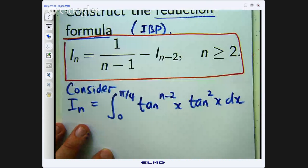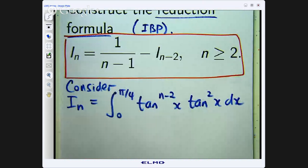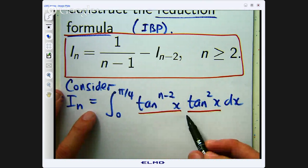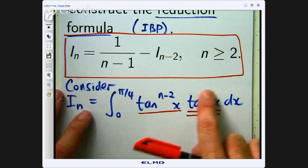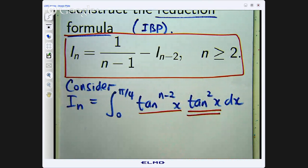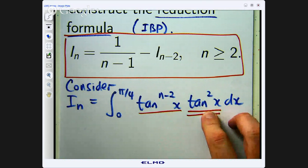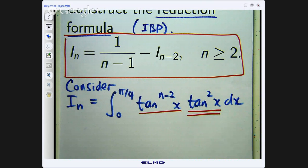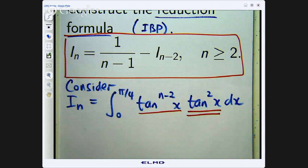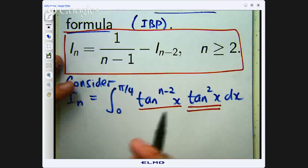I have written I sub n as this product now. What I am going to do is try to get this to a sec squared. I can use the identity tan squared plus 1 equals sec squared, or tan squared equals sec squared minus 1.